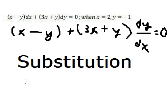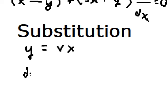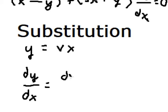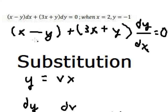We will let y equal to v times x. If we do the first derivative, we get dy over dx. The first derivative of v gives us dv over dx multiplied by x, and the first derivative of x gives us v. Now we need to change everything using this substitution.